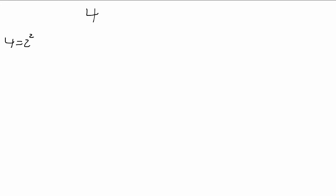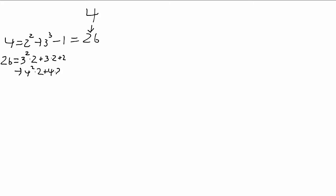We're looking at Goodstein sequences, which start with some number n. At each step we increase the number using the hereditary base change operation, and then we subtract 1. Our goal right now is to show that, no matter what number we start with, these sequences eventually reach 0 and stop.